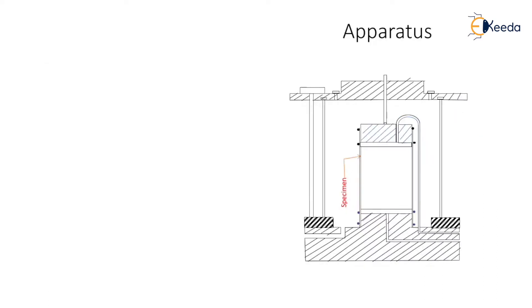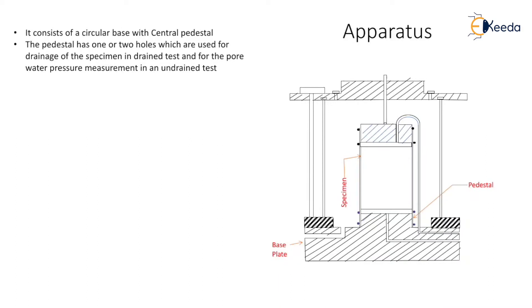Before starting with the procedure, we will understand the working of the apparatus. The apparatus consists of a circular base with a pedestal. We can see a circular base plate at the bottom with a pedestal at the center. A specimen is fixed over the pedestal. The pedestal has one or two holes which are used for the drainage of the specimen in a drained test.